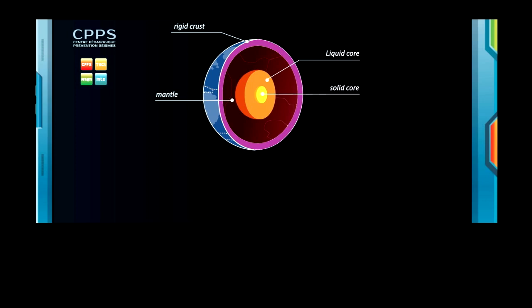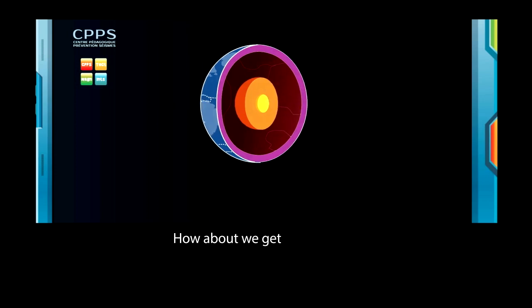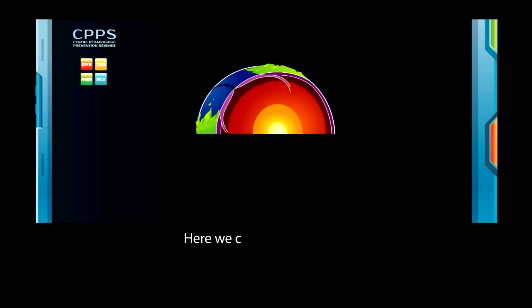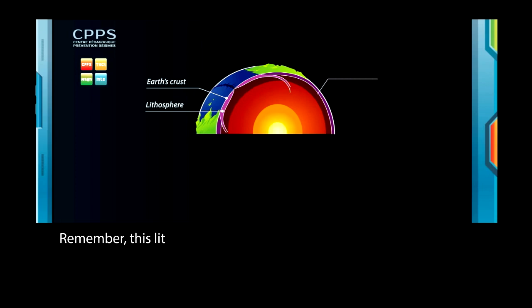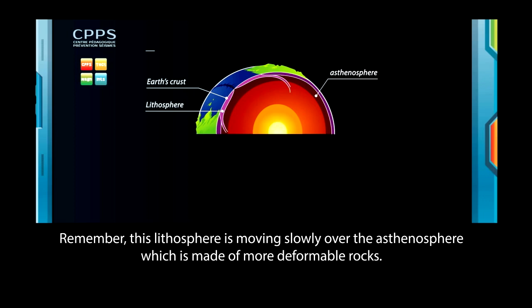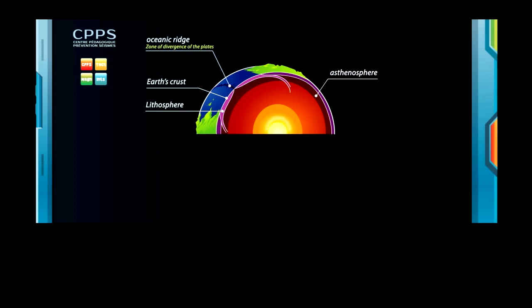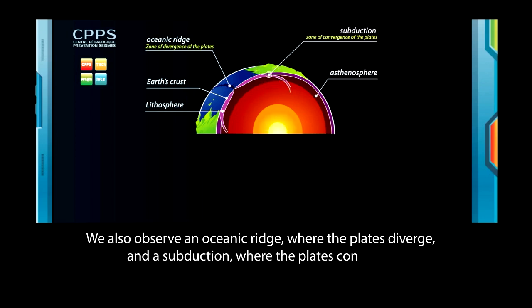How about we get a little closer? Here we can see more details. We still have our Earth's crust, which is the outer part of the lithosphere. Remember, this lithosphere is moving slowly over the asthenosphere, which is made of more deformable rocks. We also observe an oceanic ridge, where the plates diverge, and a subduction, where the plates converge.